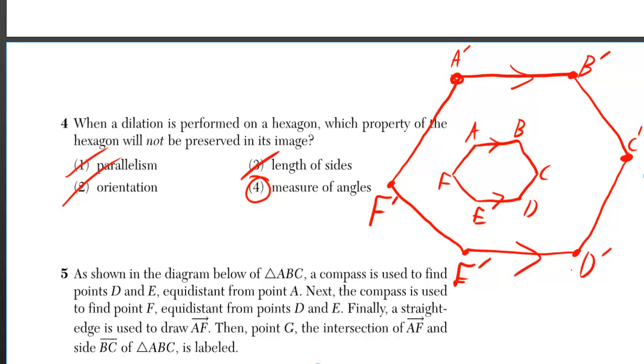They get bigger to take in more light when you turn off the light. They get smaller to take in less light when you turn on the light. So, it keeps the same shape, but they get bigger or smaller.